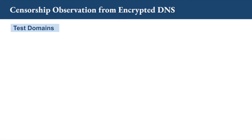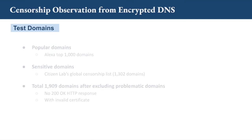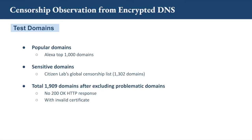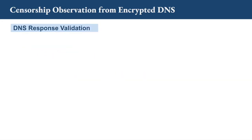What domains are we going to test? Our domain list consists of popular domains and sensitive domains. The popular domains come from the Alexa top 1,000 domains, and the sensitive domains come from Citizen Lab's global censorship list. After excluding some problematic domains, we have 1,900 domains in total.